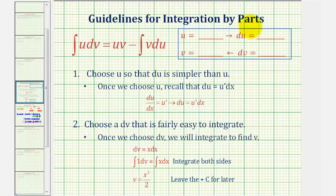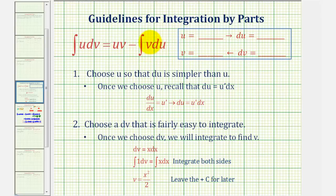Welcome to an example of integration by parts. Integration by parts is an integration technique that's often helpful when the integrand is a product and doesn't fit one of the basic integration formulas. So the given integral is the integral of u dv, which using integration by parts is equal to u times v minus the integral of v du.